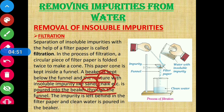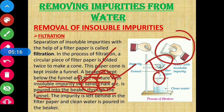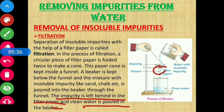The mixture containing insoluble impurities such as sand or chalk powder is poured through the filter paper placed in the funnel, with a clean beaker kept below. The impurities are left behind on the filter paper, and the clean water passes through into the beaker. In this way we can separate those impurities from the water.